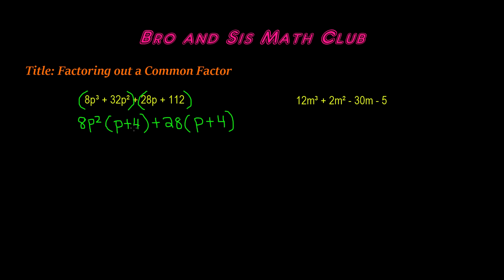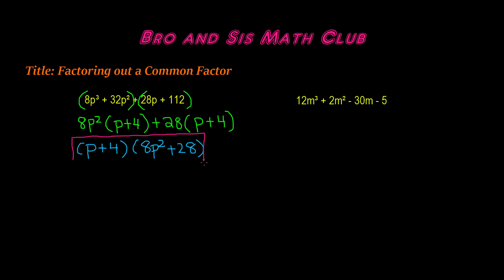Now if you see that the two binomials left in the parentheses are the same, that means we're on the right track — they need to be the same when you're factoring out a common factor with four terms. We have 8p squared plus 28, and then p plus 4 and p plus 4. All we have to do now is write out the common factor, which is p plus 4, in one set of parentheses, and put 8p squared plus 28 in the second set. So our final solution is p plus 4 times 8p squared plus 28. You can always check your answer by using the distributive property.